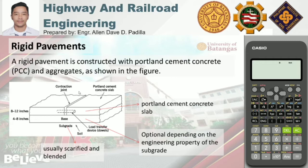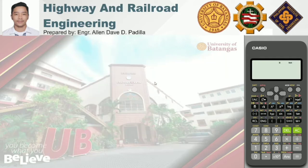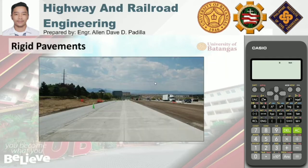What is the purpose of a contraction joint? A contraction joint is a sawed, formed, or tooled groove in a concrete slab that creates a weakened vertical plane. It regulates the location of cracking caused by dimensional changes in the slab. This is what rigid pavement looks like in actual construction.